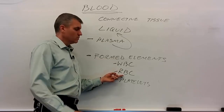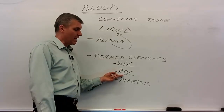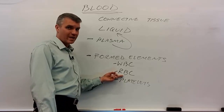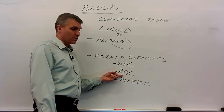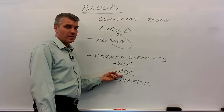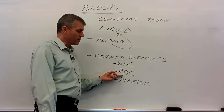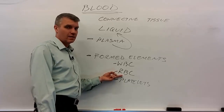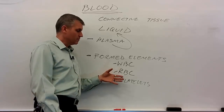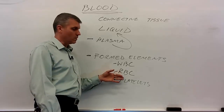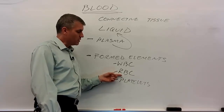Red blood cells have one huge major job: carrying and transporting oxygen. Red blood cells appear red because they're filled with a molecule called hemoglobin. Hemoglobin molecules can carry four oxygen molecules per hemoglobin. So carrying oxygen around is the major job.